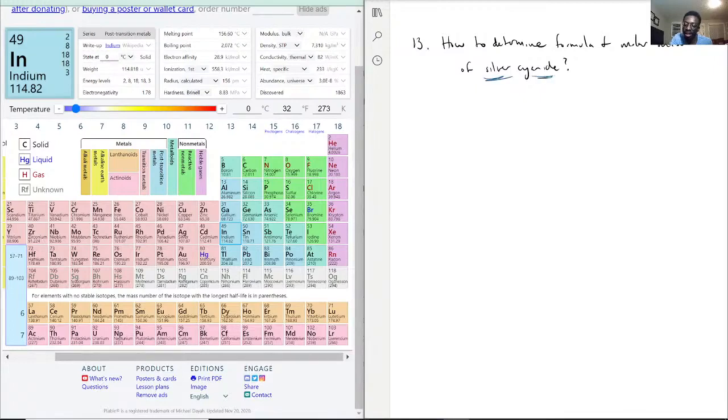Unfortunately, this is something you do have to memorize because you won't be able to find cyanide on the periodic table, but you can definitely find silver on the periodic table. Silver is just Ag. Now silver is a strange one, but the whole transition metals...